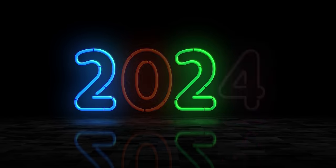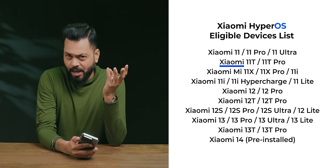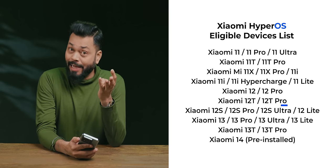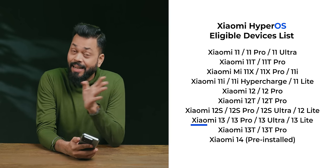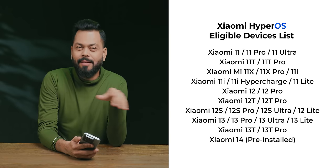In the first quarter of 2024 — January to March 2024 — there will be 8 phones getting HyperOS 1.0. There will be Xiaomi 11T, 12T, 12T Pro, and then Xiaomi 13, the entire series — 13, 13 Pro, 13T. All those phones will get it in the first 3 months, and then later on, different phones phased out will also get HyperOS 1.0.